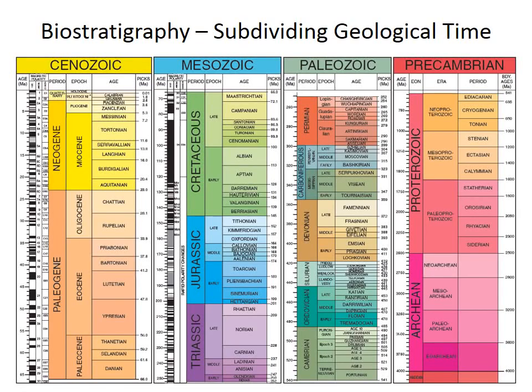This lecture focuses on biostratigraphy, the process of using fossil ranges to subdivide rock units into time bins and to correlate those rock units between different localities and regions. The geological timescale was developed in the 19th century primarily based on fossils and biostratigraphic correlation, long before the absolute ages in millions of years were actually known. The periods like the Cretaceous or the Permian are well known, but there are finer subdivisions within those periods, also based on their fossil content.